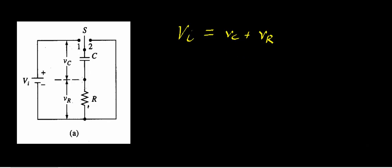This voltage right here — and let me do this in a bold color — this voltage of the battery is the input voltage. The input voltage is constant. That's a constant value, and as we'll see later, that comes into play when we manipulate this equation a little bit.